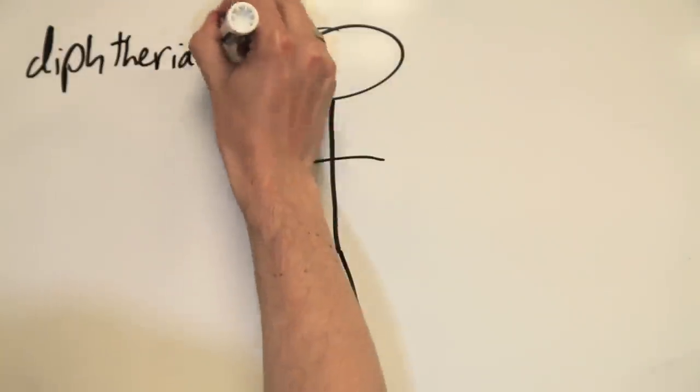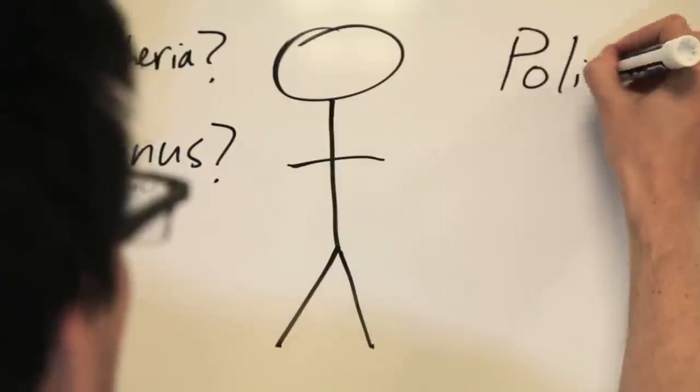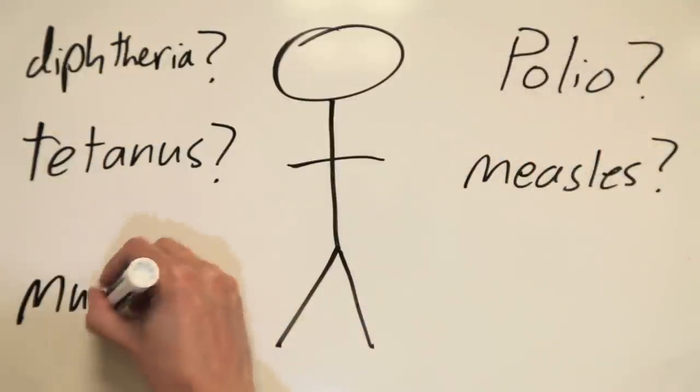How many people do you know who have had diseases like diphtheria, tetanus, polio, measles, mumps, or smallpox?